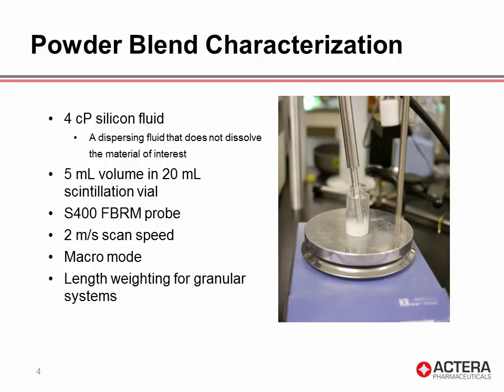In this application example, we're only using 5 milliliters of fluid for only a few tens of milligrams of powder. This powder blend is suspended by a small magnetic stir bar in the bottom of a scintillation vial — a nice setup if you have limited quantities of sample. The parameters of 2 meters per second scan speed, macro mode, and length weighting are all probe settings we have found appropriate for monitoring these powder or granular systems.